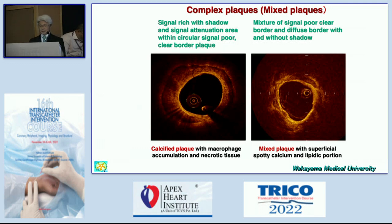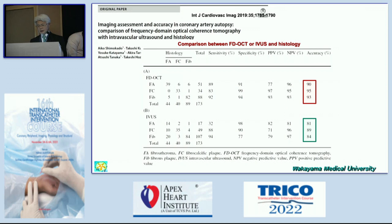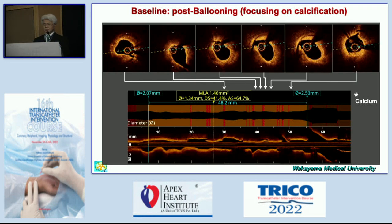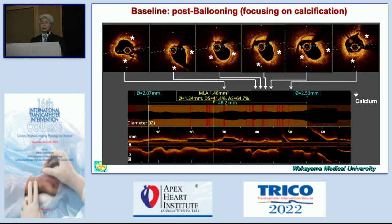OCT is much easier than IVUS, and our recent data shows that accuracy of diagnosis is much better by OCT compared with IVUS. Going back to the initial image, you can identify lots of complexity and some dissection after pre-dilatation, with calcium here and here — lots of calcium in this case. However, each calcium angle is very narrow, and we have lots of fibrous portions. Therefore, we can dilate further with a high-pressure non-compliant balloon and put a stent without any issue.